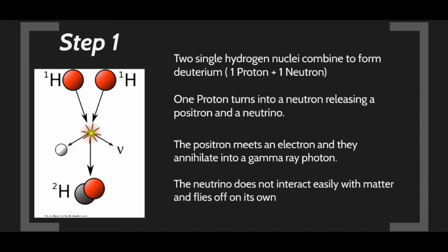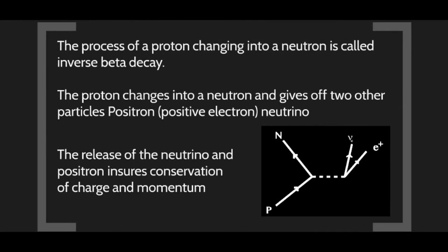If two protons get close enough together that the strong force overwhelms the electromagnetic force, they will bind together. Since two positive particles don't want to stay together, one of those protons converts into a neutron. This happens through a weak nuclear force process referred to as inverse beta decay.